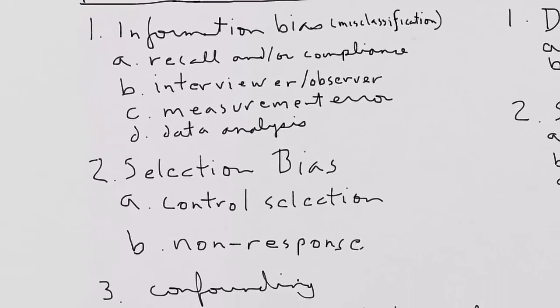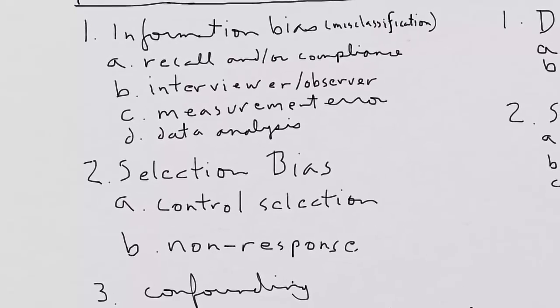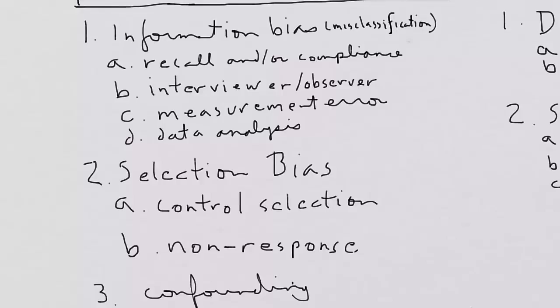Information bias, also known as misclassification if it's a categorical variable. We have subset A, recall and/or compliance. Subset B, interviewer or observer bias. And subset C, measurement error. And D, data analysis, so error in data analysis.